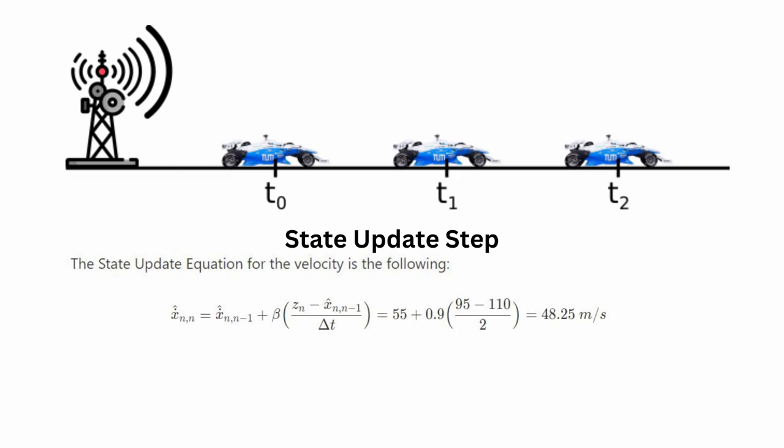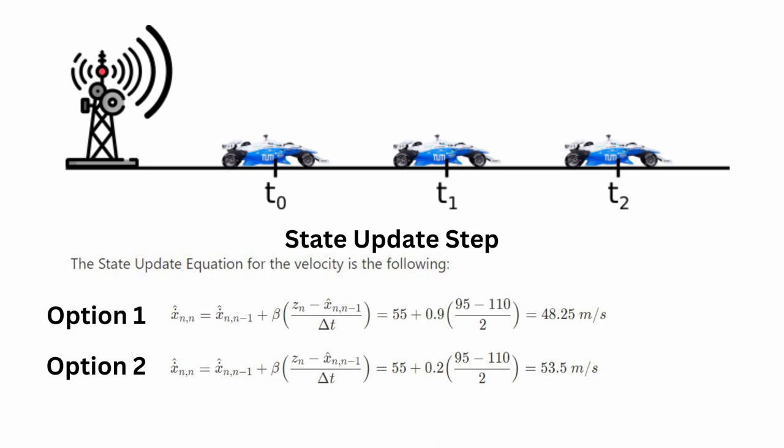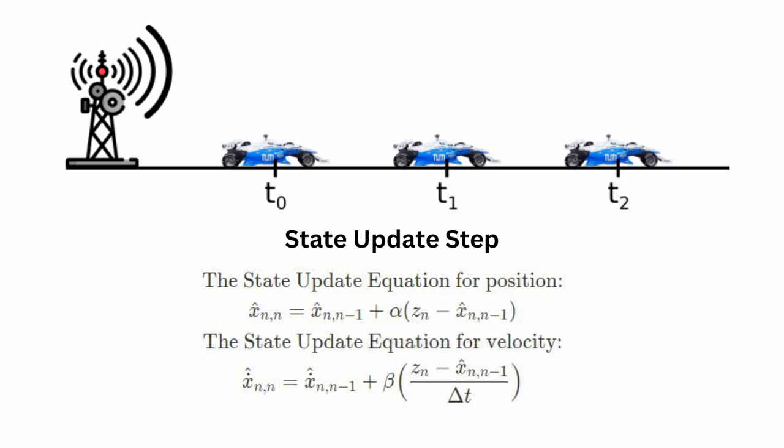If you know your antenna measurements do not have a lot of precision, set beta to a lower value — you trust your prediction more than your measurement. These two equations with different values of beta give you different velocity values. Although in the state predict step we assumed the car's velocity was constant, the velocity changes in the state update step — that's the point. The state update step takes care of state values even though some were assumed constant. These equations compose the alpha-beta track update equations, or alpha-beta track filtering equations, for position and velocity.